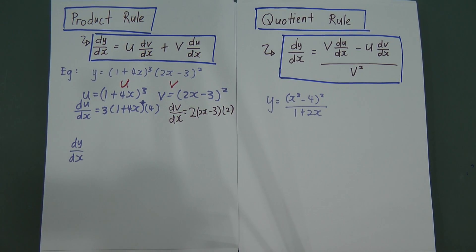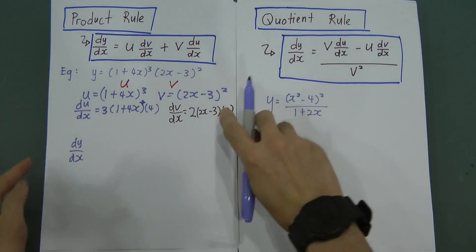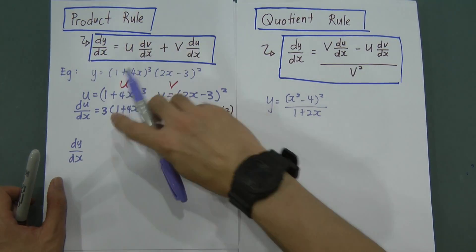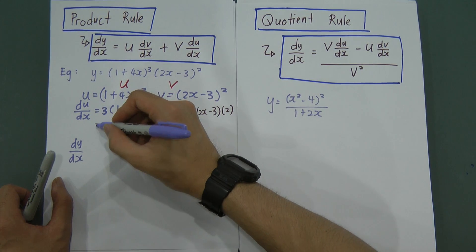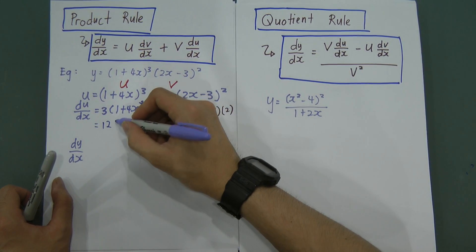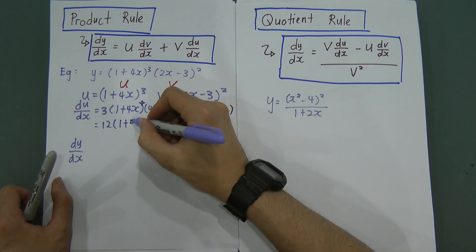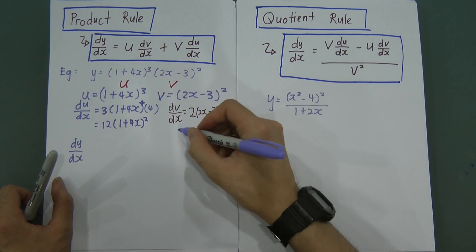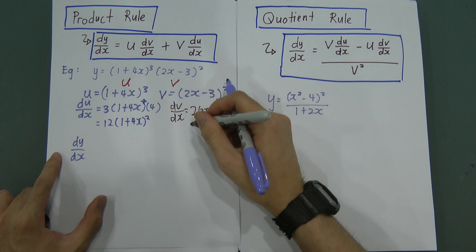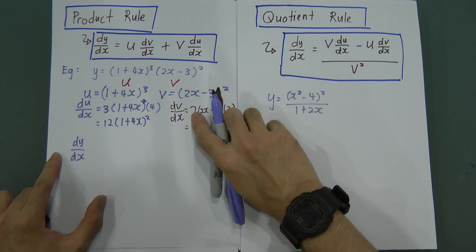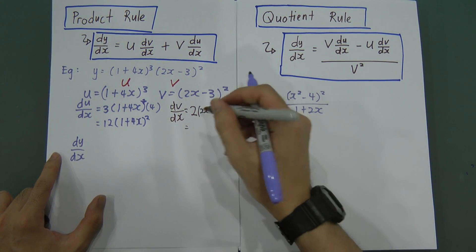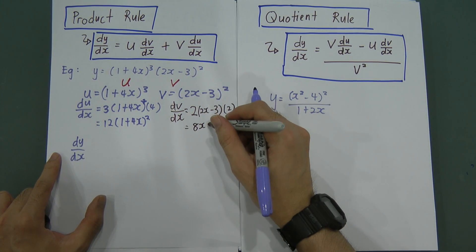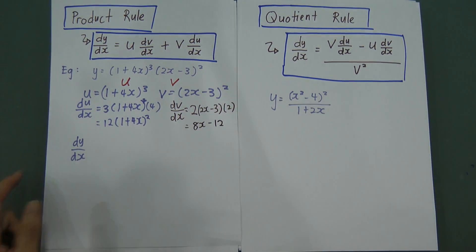After that, multiply the numbers together. For du/dx: 4 multiplied by 3 gives 12, so du/dx = 12(1 + 4X)². For dv/dx: 2 multiplied by 2 gives 4, and then 4 times 2X gives 8X, and 4 times negative 3 gives negative 12.